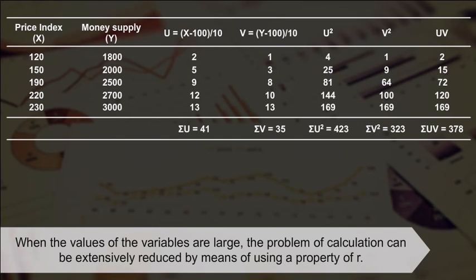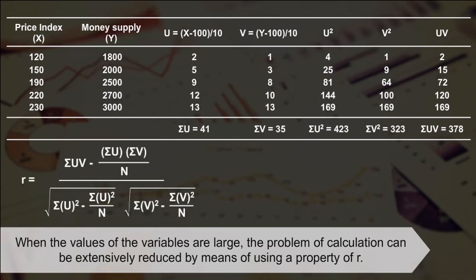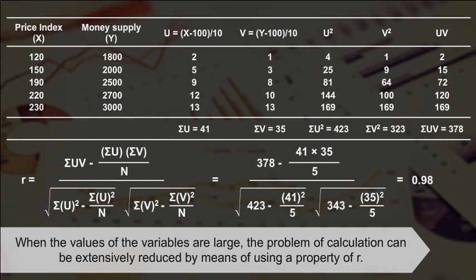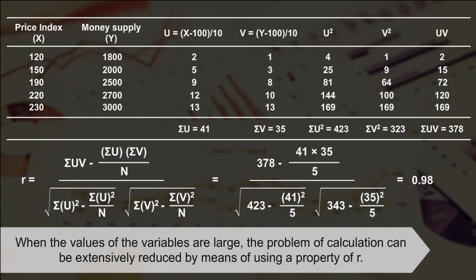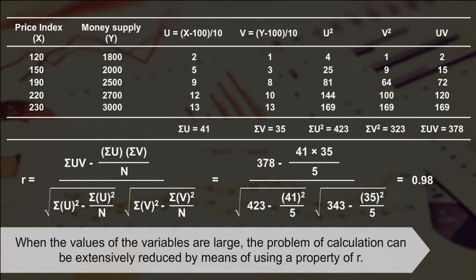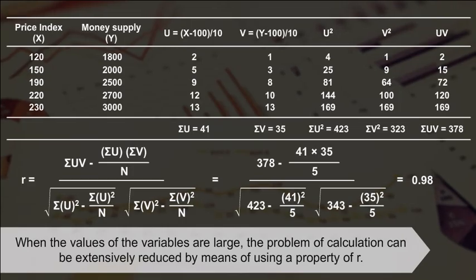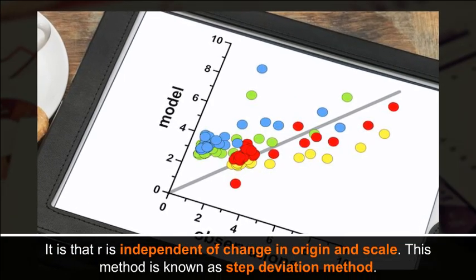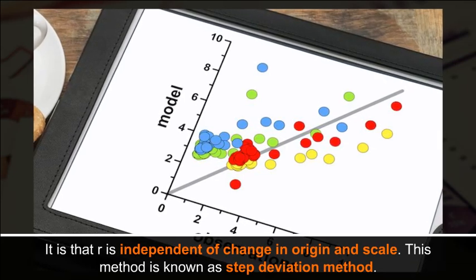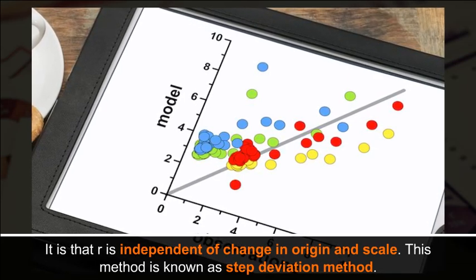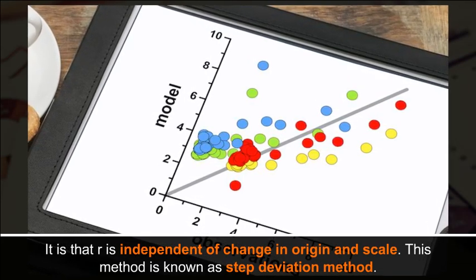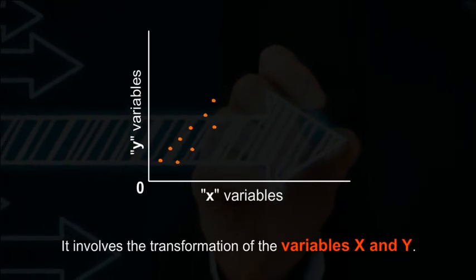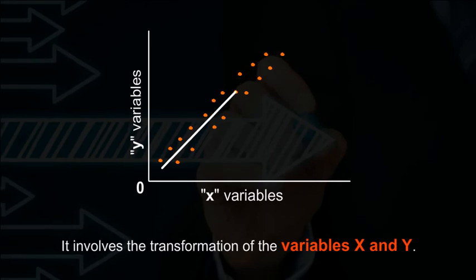When the values of the variables are large, the problem of calculation can be extensively reduced by using the property that r is independent of change in origin and scale. This method is known as the step deviation method, and it involves the transformation of the variables x and y.